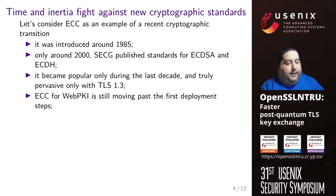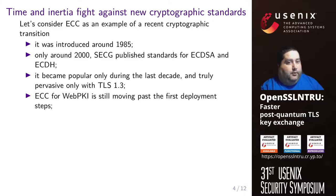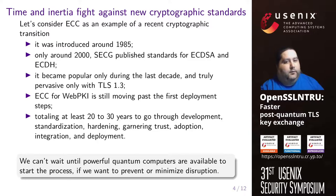Let's consider ECC, Elliptic Curve Cryptography, as an example of a recent cryptographic transition. ECC was introduced around 1985, but it was only around 2000 that SECG published finalist standards for ECDSA and ECDH. After this, it became popular only during the last decade and truly pervasive only with TLS 1.3. Even considering this as a milestone, ECC for the web public infrastructure today is still moving past the first deployment steps. And this is all to say that it took us at least 20 to 30 years to go through development, standardization, hardening, and running trust, adoption, integration, and deployment, which are steps required for a successful cryptographic transition.